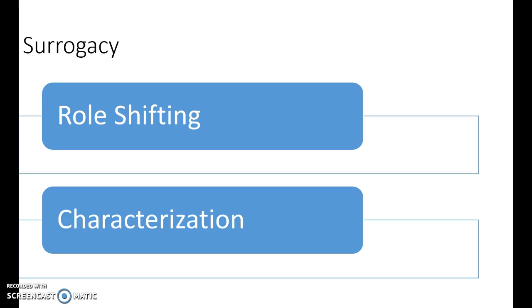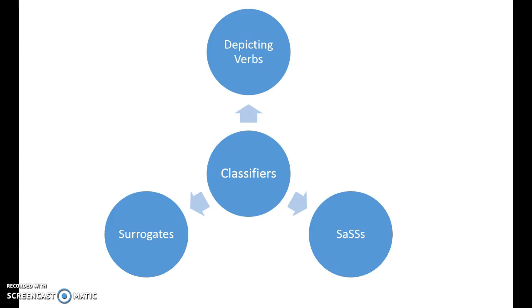Surrogacy means when the speaker takes on the characterization of another person. This is common in role shifting when you shift back and forth to show people talking. Sometimes this was referred to as a classifier, as if the whole body became a classifier, but really surrogacy is a better term for what happens here.